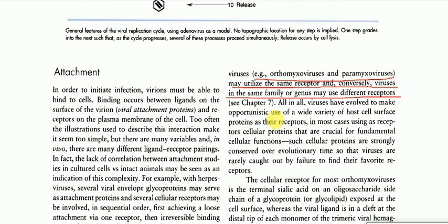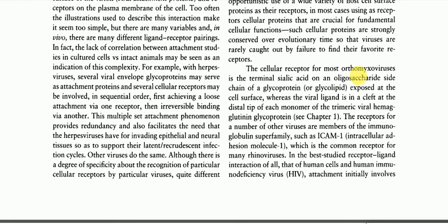All in all, viruses have evolved to make opportunistic use of a wide variety of host cell surface proteins as their receptors, in most cases using cellular proteins that are crucial for fundamental cellular functions. Such cellular proteins are strongly conserved over evolutionary time, so that viruses are rarely caught out by failure to find their favored receptors. The cellular receptors for most orthomyxoviruses are terminal sialic acid on oligosaccharide side chains of a glycoprotein or glycolipid exposed at the cell surface, whereas the viral ligand sits in a cleft at the distal tip of each monomer of the trimeric viral hemagglutinin glycoprotein.